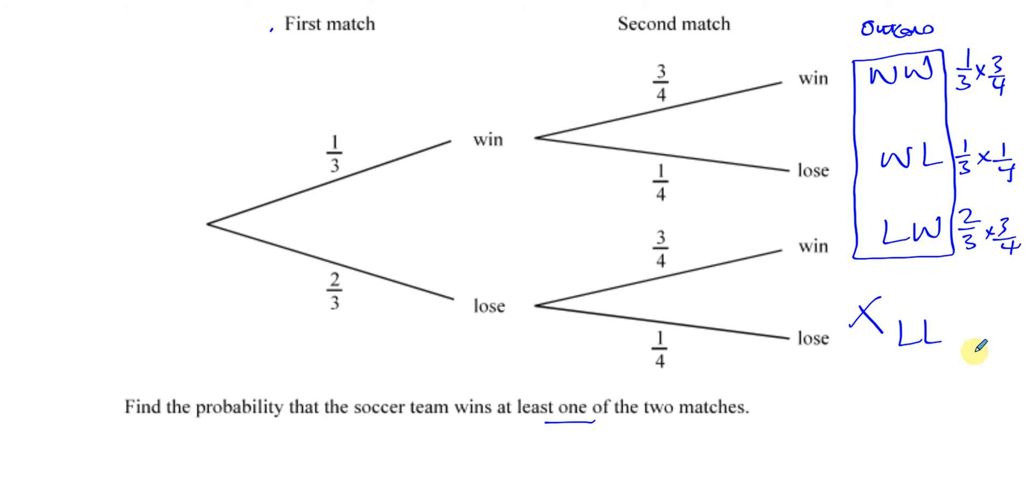which is this one here, which is two thirds times a quarter, if I find that product and subtract it from one, I will have got the same answer as combining all of these together.